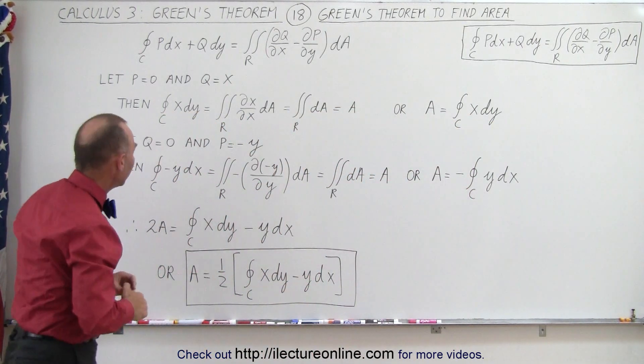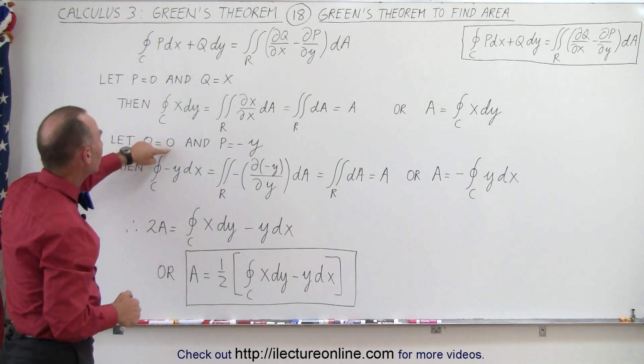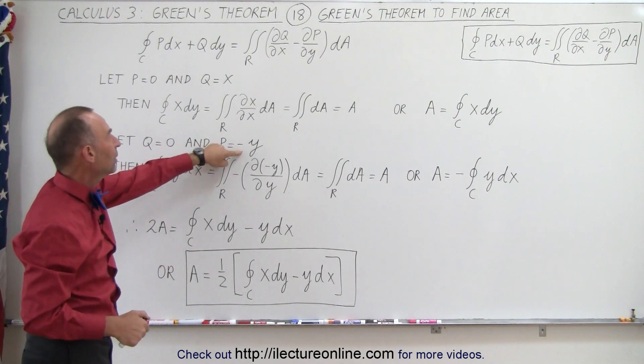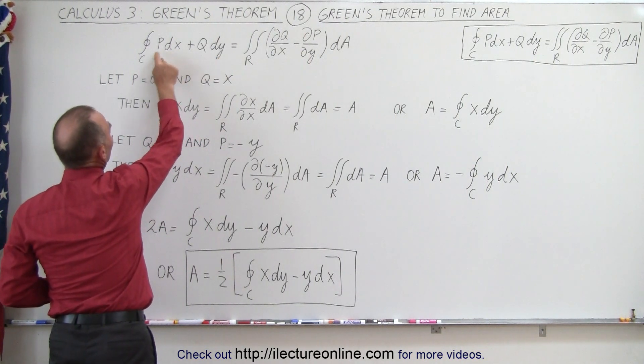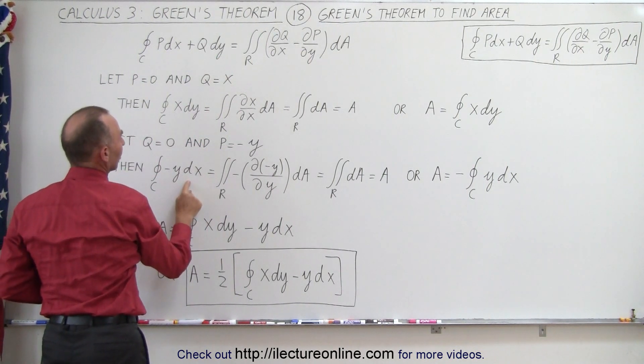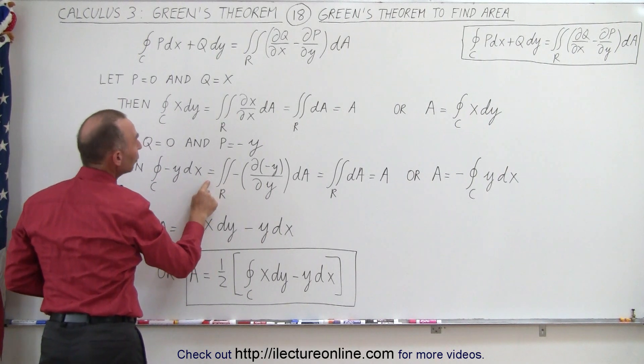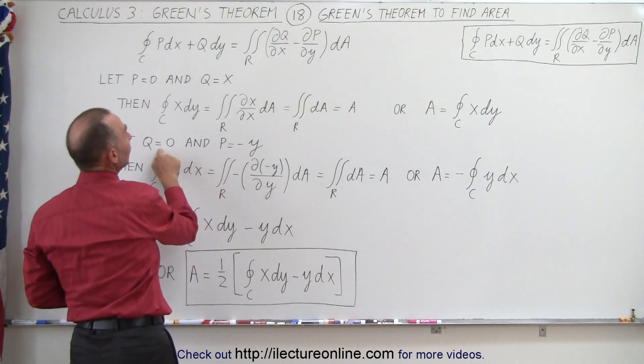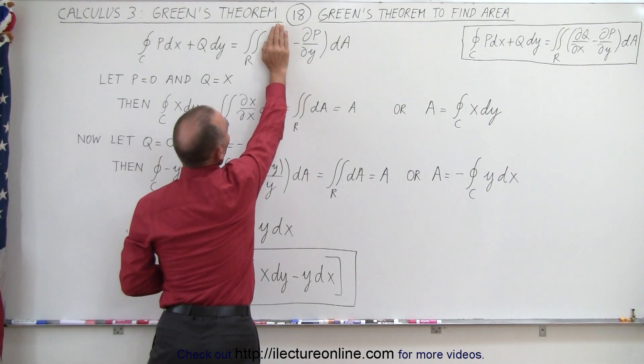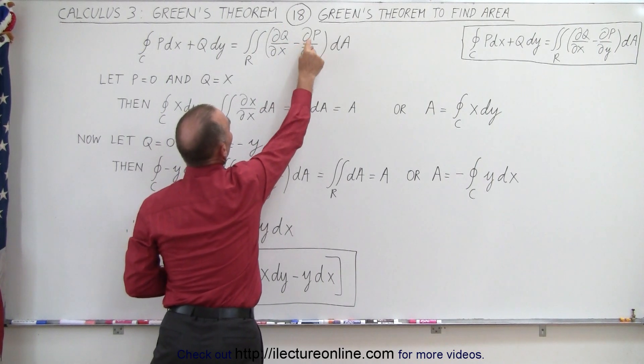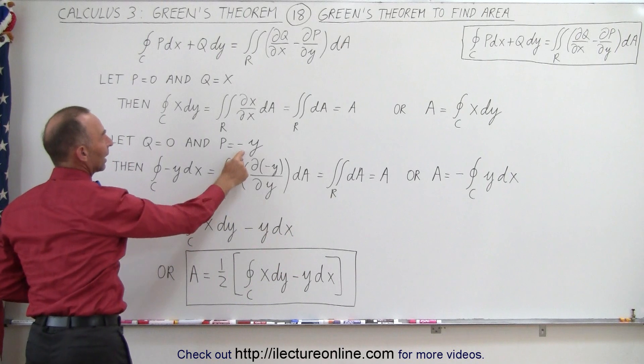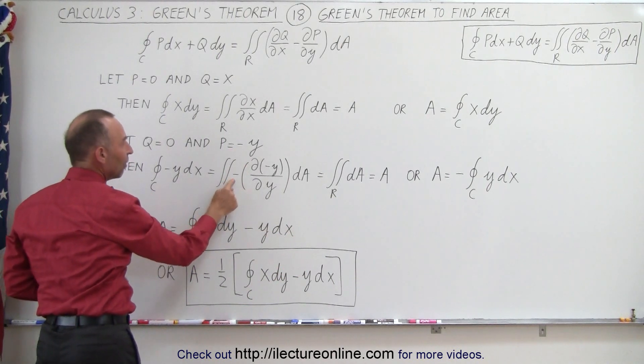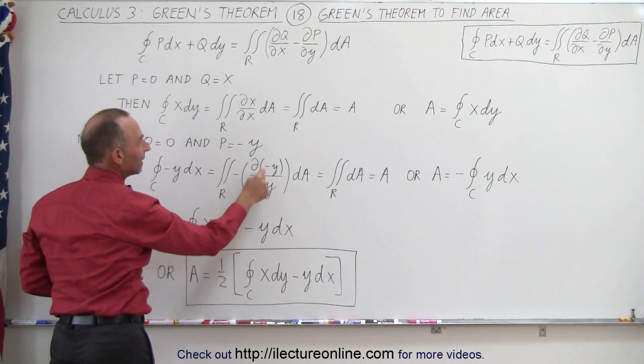Now we do this again. Now we're going to set q equal to 0 and set p equal to negative y. So then this goes to 0 and p dx becomes negative y dx. That will then be equal to, notice since now q is equal to 0 this goes to 0, and we end up with a negative partial of p with respect to y. But since p is equal to negative y this becomes the negative of the partial with respect to y of a negative y.